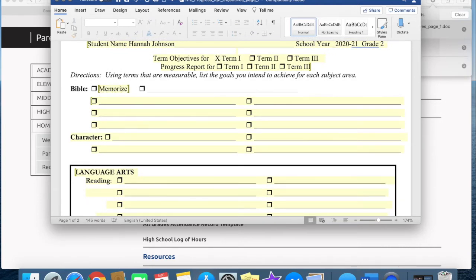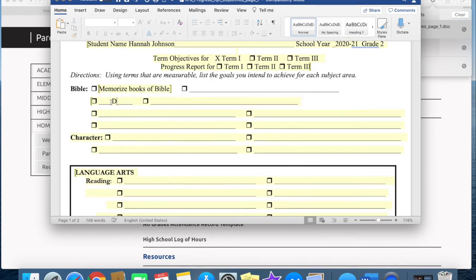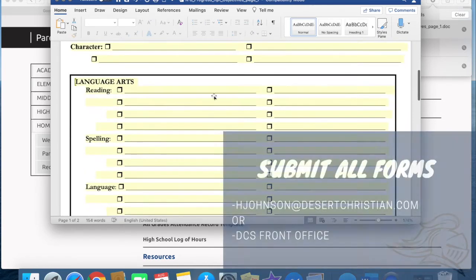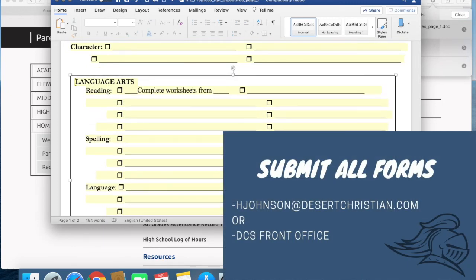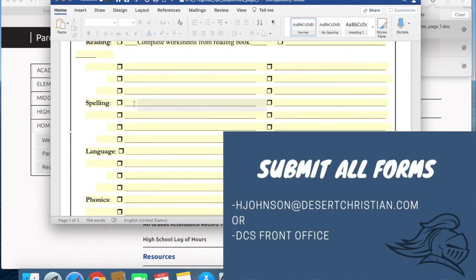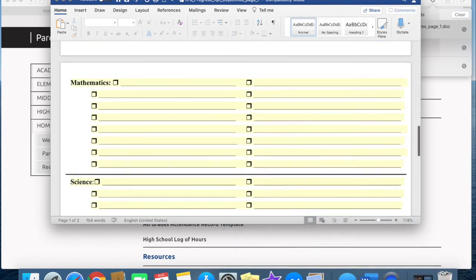Write measurable terms and use chapter titles as a guide. Once completed, submit this to hjohnson@desertchristian.com or at the front office. Remember to check off each goal as you complete them through the term.